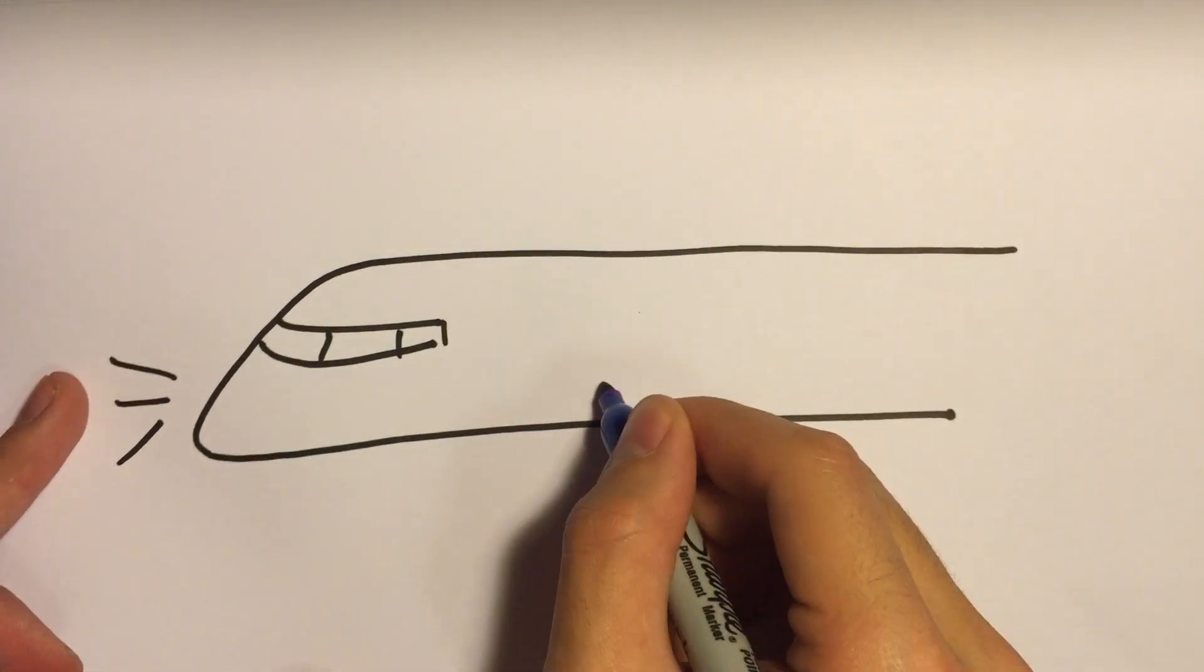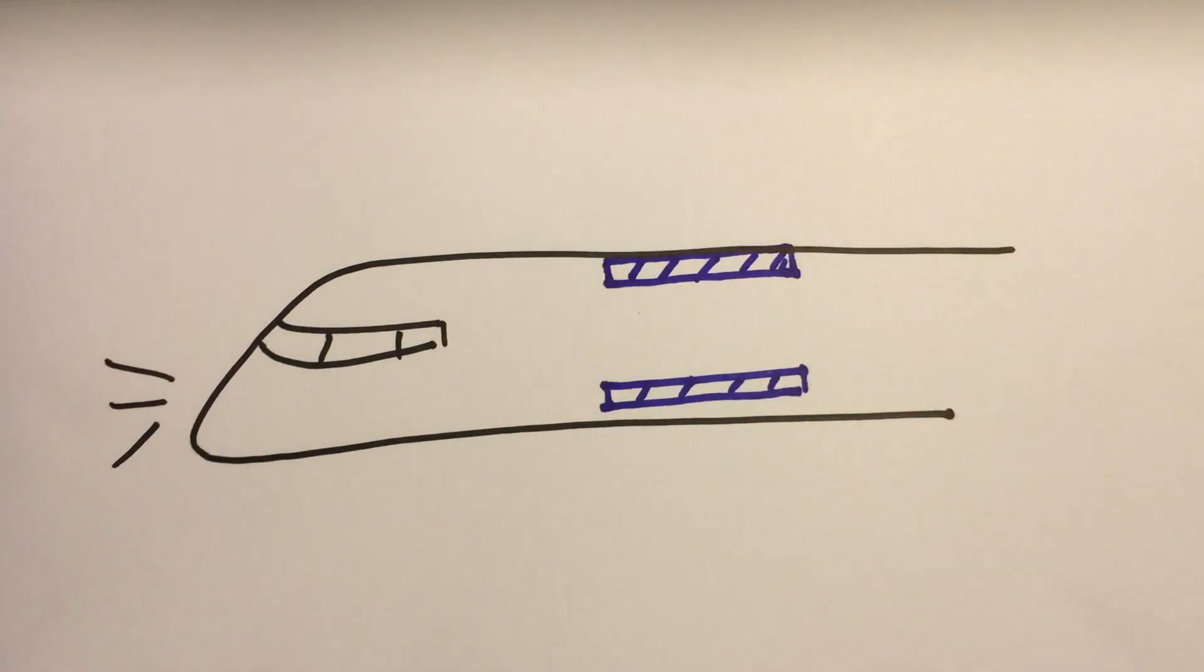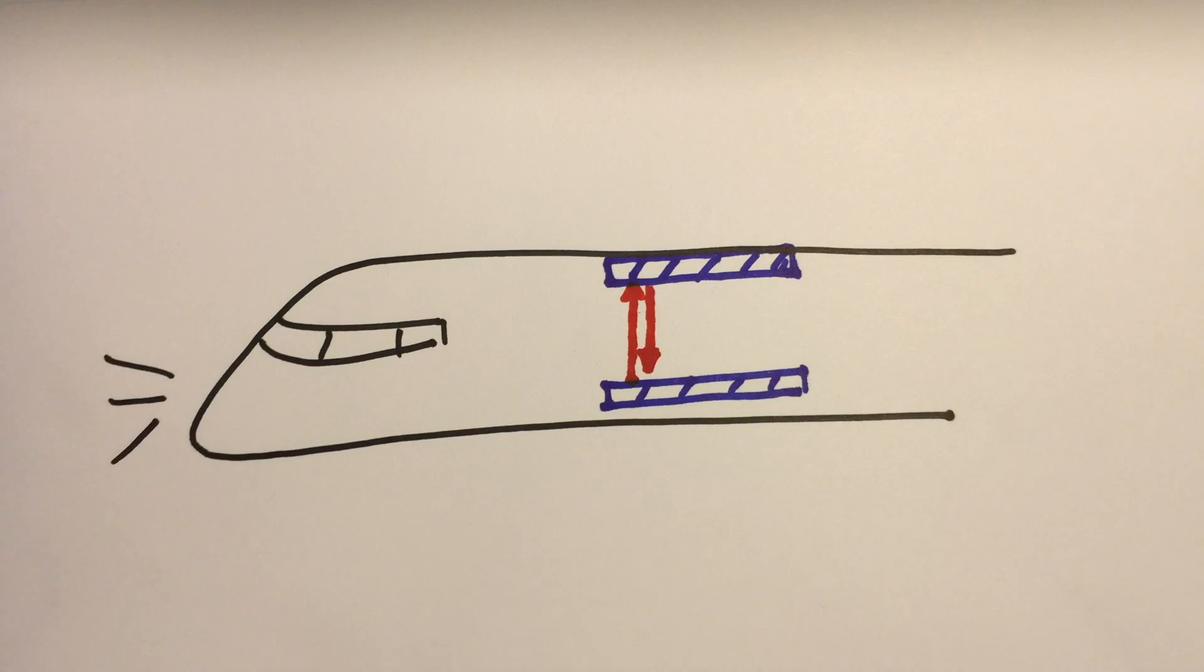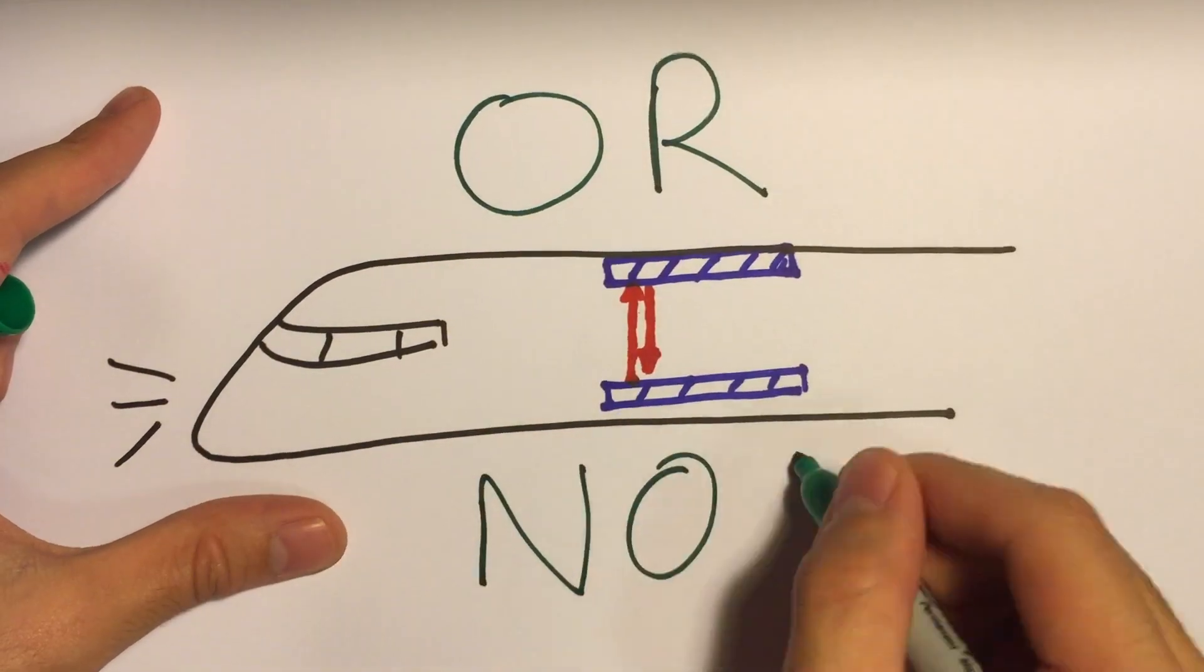So let's imagine that in a train, we have two parallel mirrors and a laser light. Right here, when the laser emits photons, the light particles, these will bounce and will move vertically. Or not?